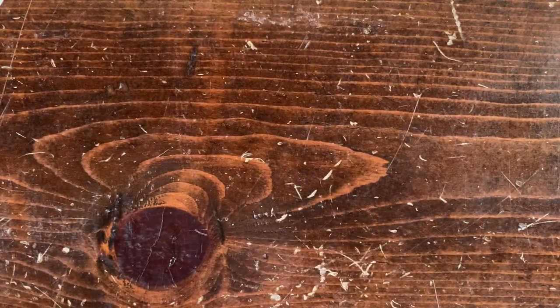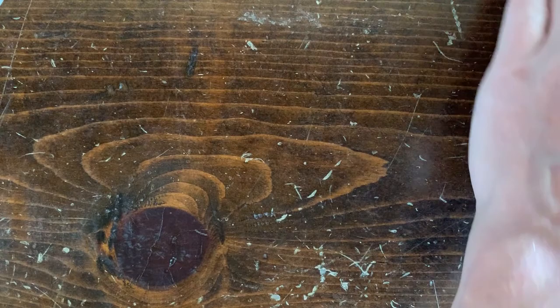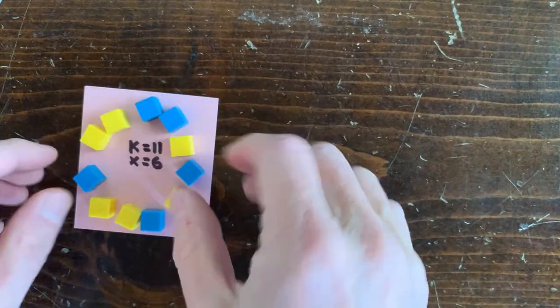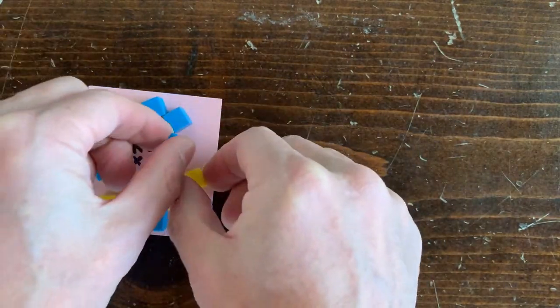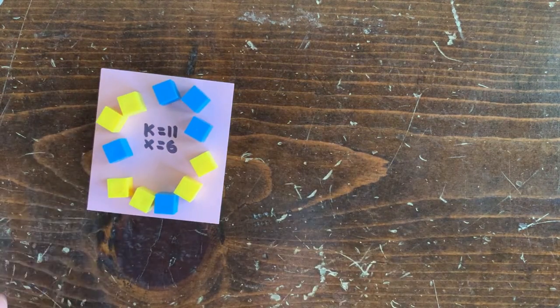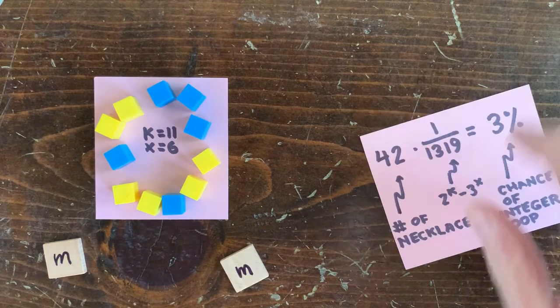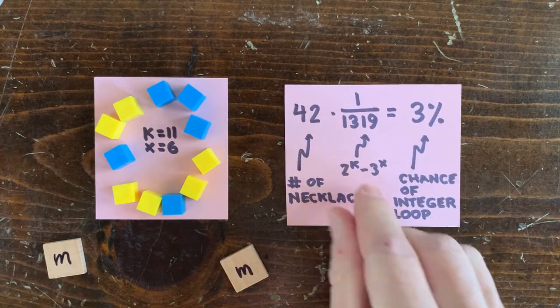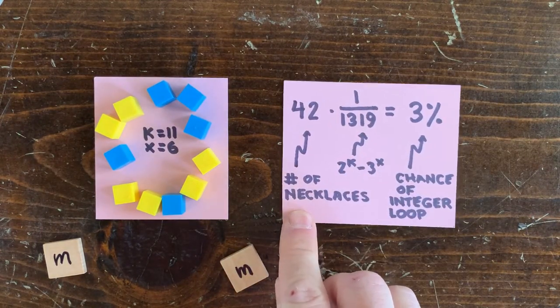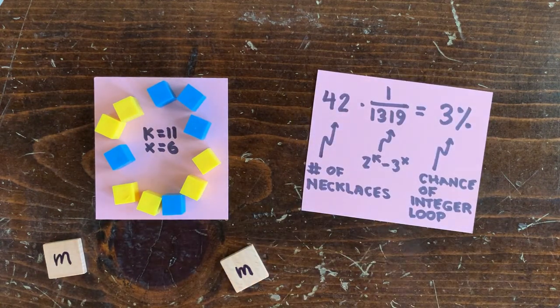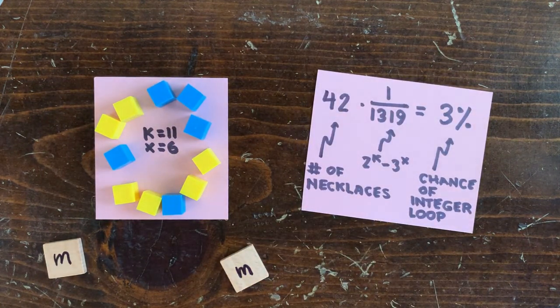For example, if we have k equals 11 and x equals 6, it turns out we can make 42 different necklaces. Here's one of them. Here's another one. If we straighten this out and solve for m, is m going to be an integer? Well, there's a 1 over 1,319 chance, and we have 42 shots at it. So roughly speaking, there's a 3% chance of a valid loop at length 11.